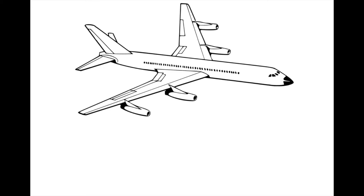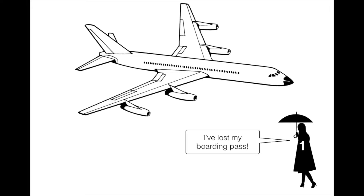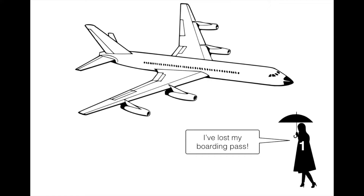In this problem there's an aeroplane with a hundred seats and there are a hundred passengers getting onto the aeroplane. Each passenger has an allocated seat. Passenger one gets on first but they realise that they've lost their boarding pass. They tell the air steward who surprisingly says, no problem, sit where you like. So this person's disorganisation is rewarded by being told that they can choose their seat randomly. It's a super relaxed airline.